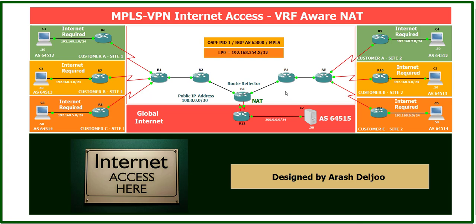Also, service providers in this type of connectivity should give NAT services to their customers. As you can see, in R6, R7, R8, R9, R10, and R11 — the CE routers — we don't have NAT, because the service provider should provide NAT at the edge of the service provider, connected to the global internet. It is much easier to configure NAT once on the service provider edge than to configure NAT on all CE routers.